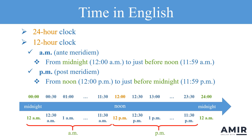Here's how I don't confuse a.m. and p.m. anymore. I focus on the word 'post' in p.m. Post means after, so I remember that p.m. refers to the time after noon. Now, whenever I see a.m. or p.m., I know exactly which one to use without hesitation.